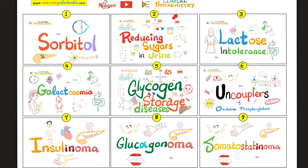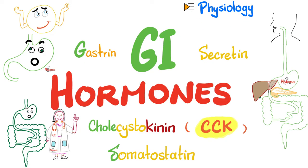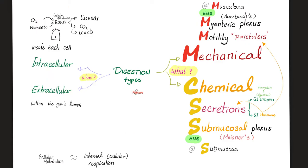Please watch the videos in this clinical biochemistry playlist in order. Also refer to my physiology video where we talked in detail about gastrin and the other GI hormones. Digestion includes two parts: mechanical digestion and chemical digestion. Mechanical means motility — movement of your gut. Chemical means secretions of enzymes and hormones to help you digest and absorb your food.